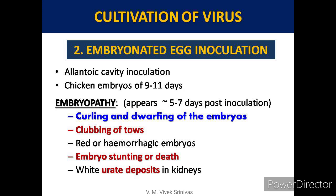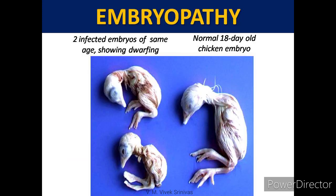The second method of cultivation is embryonated egg inoculation: allantoic cavity inoculation on 9–11-day chicken embryos. At 5–7 days post-inoculation, embryopathy such as curling and dwarfing of the embryos, clubbing of toes, and embryo stunting will be observed — a pathognomonic feature. The picture depicts this embryopathy: the right shows a normal 18-day-old chicken embryo, while the left shows two infected embryos of the same age showing dwarfing.